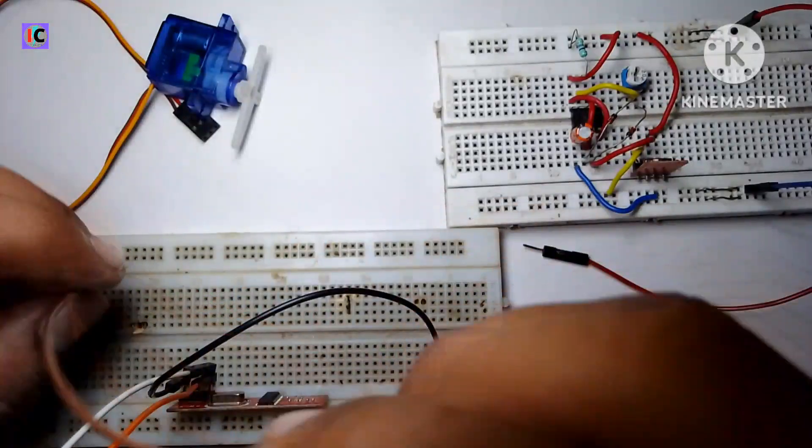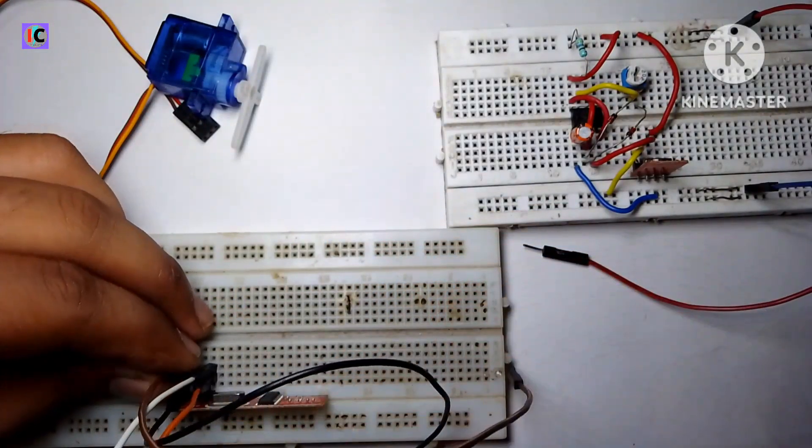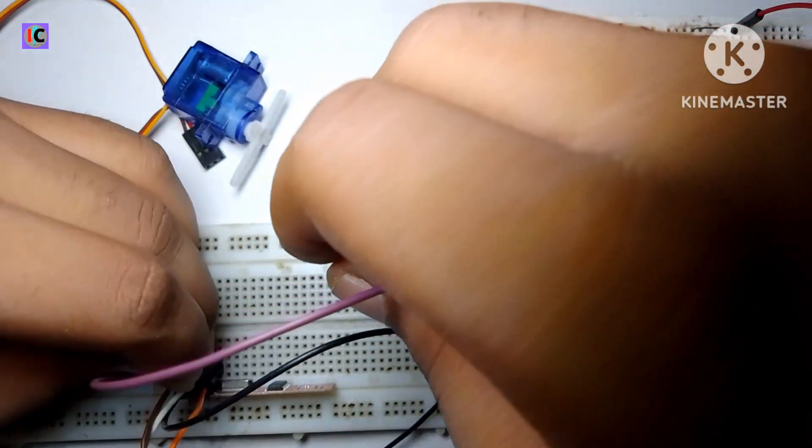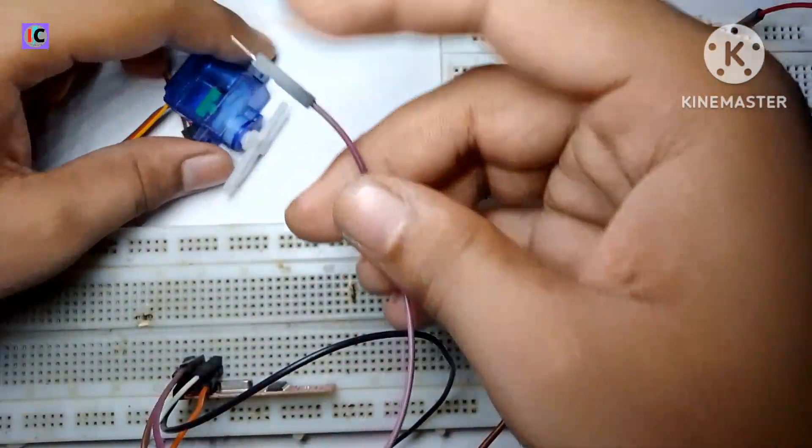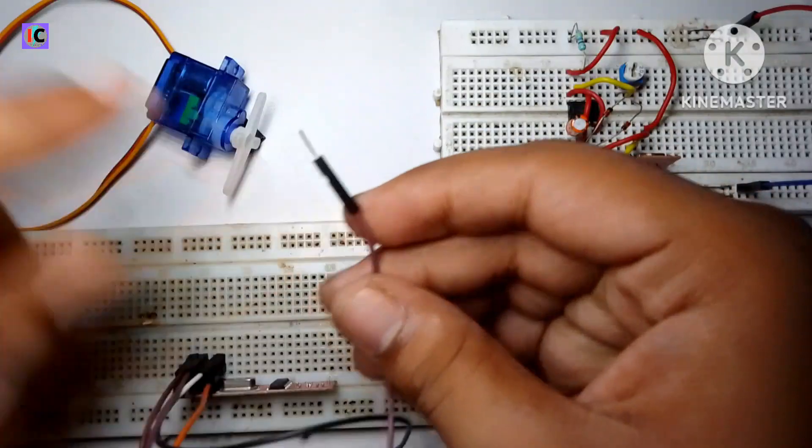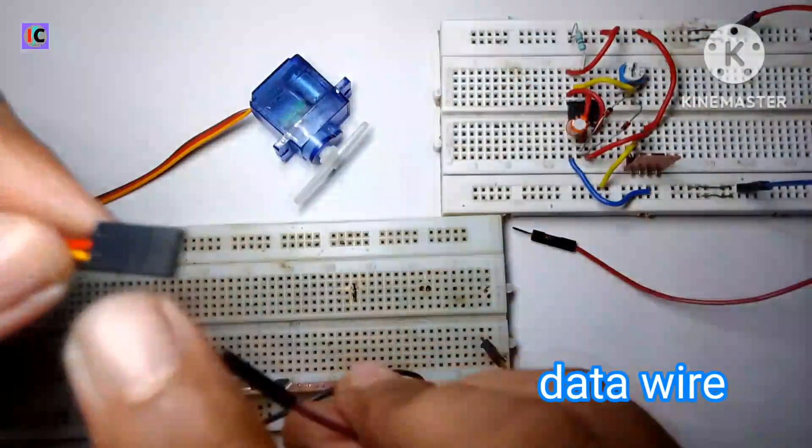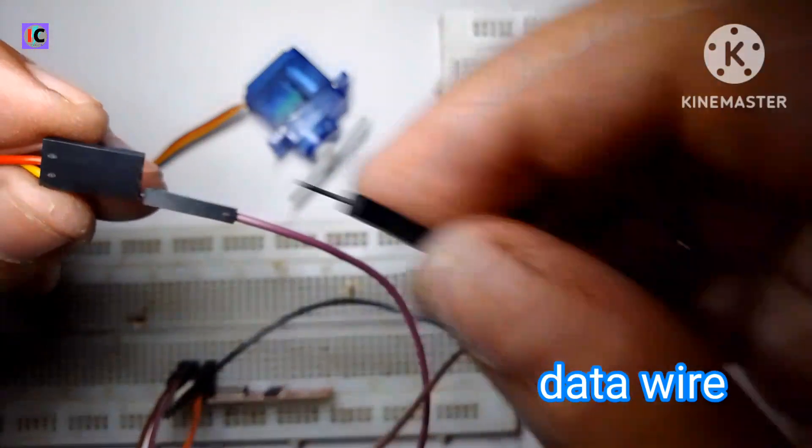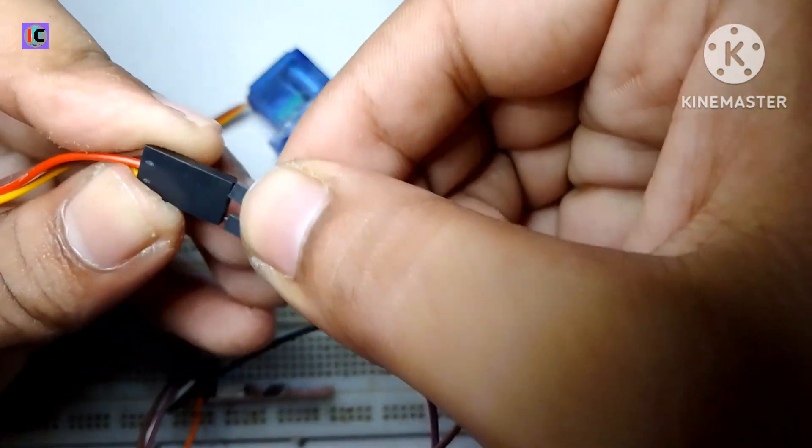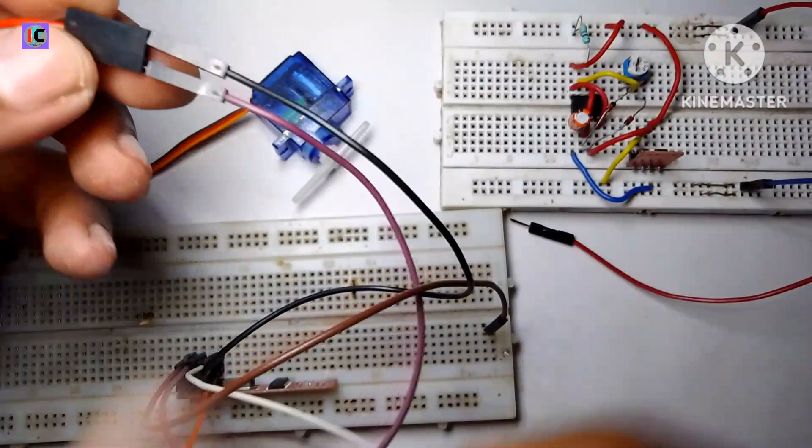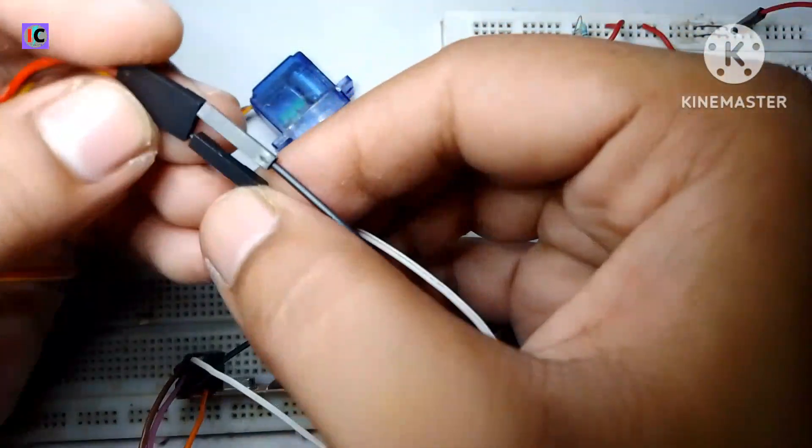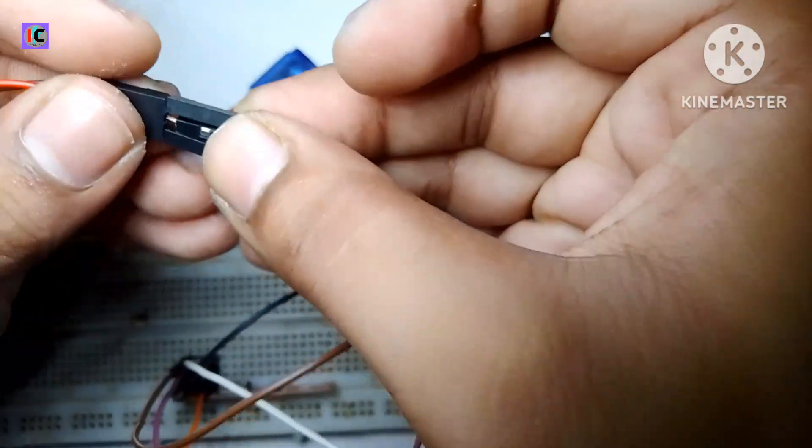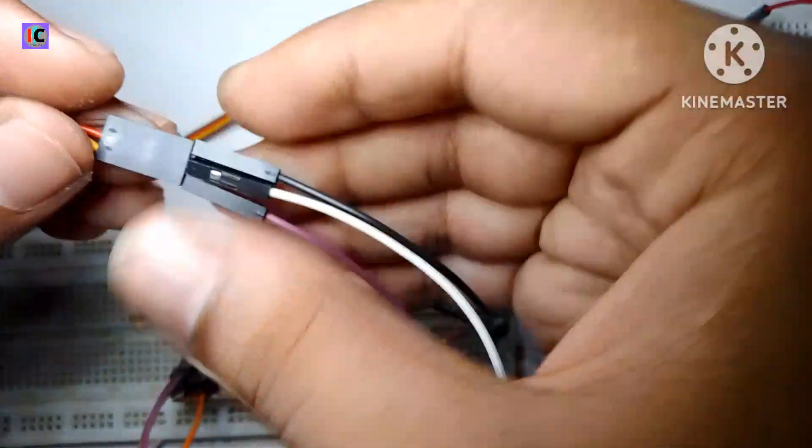Simply connect the power cables of the servo motor and modules with 5 volt. The data out pin, that is the data output pin of the receiver module, is connected to the data input pin of the servo motor, that is the orange wire of the servo motor. The positive and negative supply is connected parallel with the module.